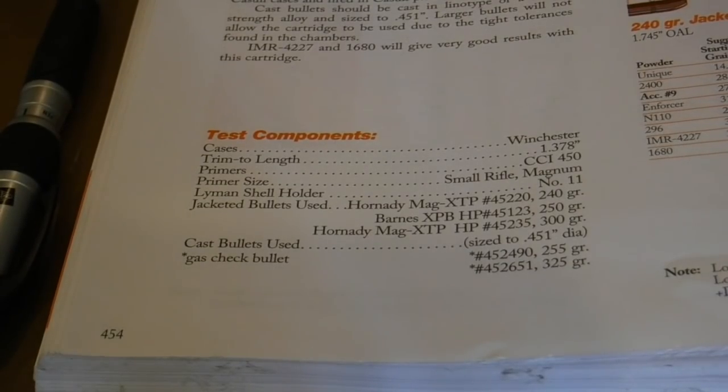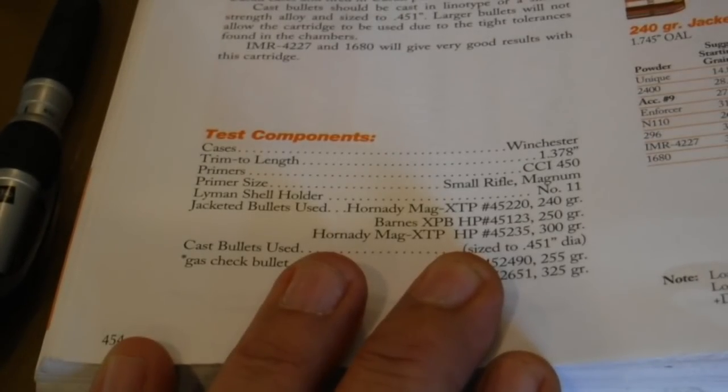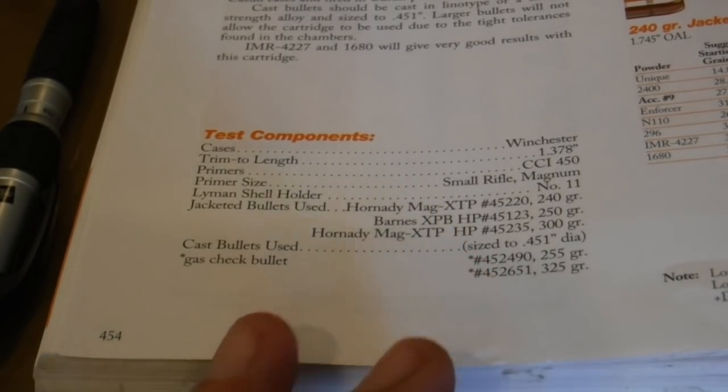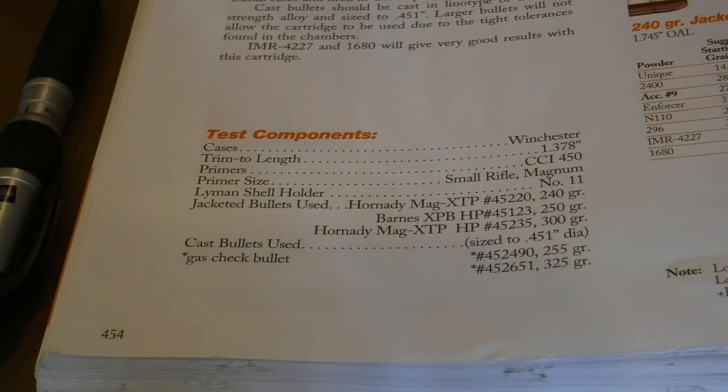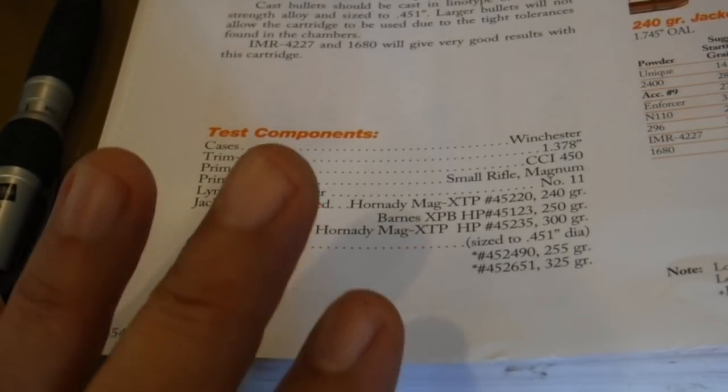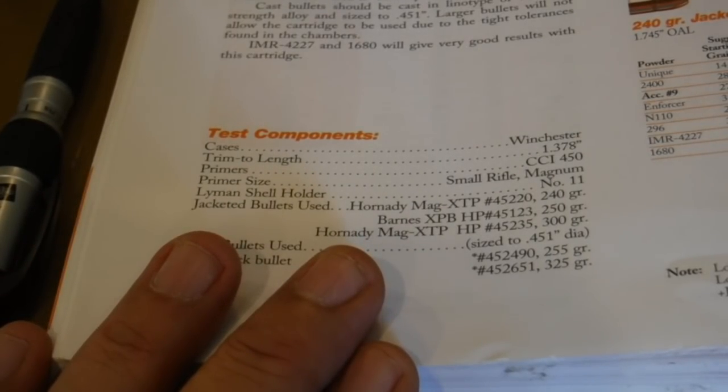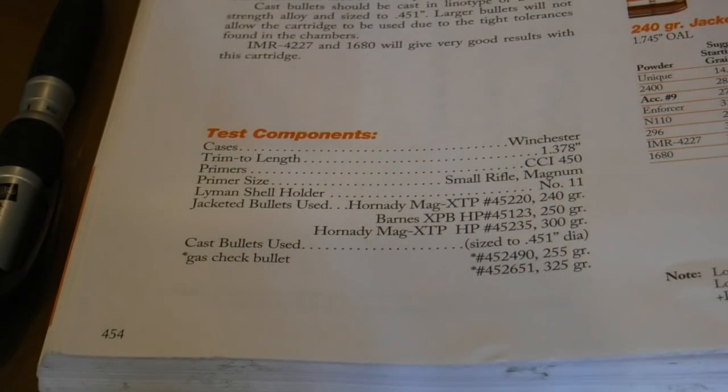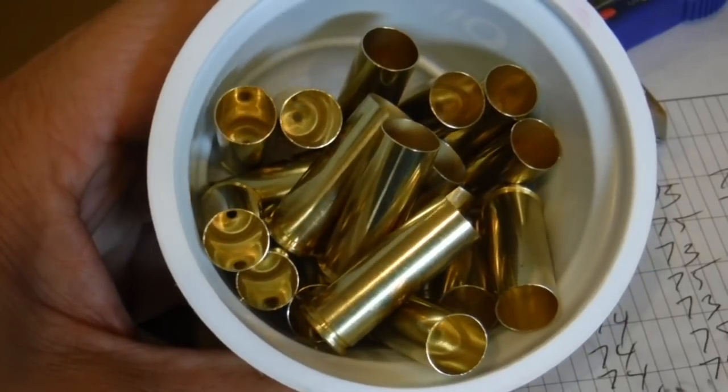So, it looks like the Starline brass is 0.004 shorter than the Trim 2 length as in the Lyman 50th edition reloading manual, but that's quite acceptable. We definitely don't need to trim our brass. It's well within the consistency, and a little bit shorter than Trim 2 length is acceptable.